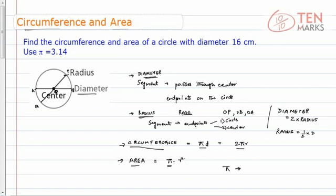Pi is a constant value — it's an irrational number. It was calculated by finding the ratio between the circumference and diameter of a circle. For any circle, no matter what circle it is, this ratio is always constant, and this is called pi. The value of pi is irrational, but we can approximate it to 3.14.